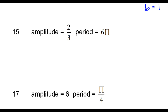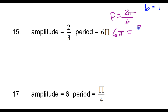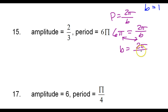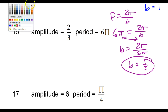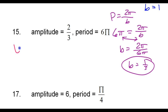Number 15. The period is 2 pi over b. So 6 pi equals 2 pi over b. Swapping gives b equals 2 pi over 6 pi. The pi's cancel, and 2 sixths is 1 third. Armed with that b value, y equals 2 thirds cosine of 1 third x.